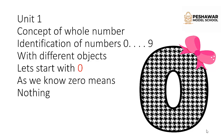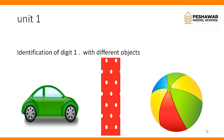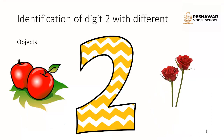Let's start with 0. As we all know, zero means nothing, that's why here we have no object. Next number is 1, and here we have one car and one ball which shows the value of 1. Next number is 2, and here we have 2 red apples and 2 roses which shows the value of 2.